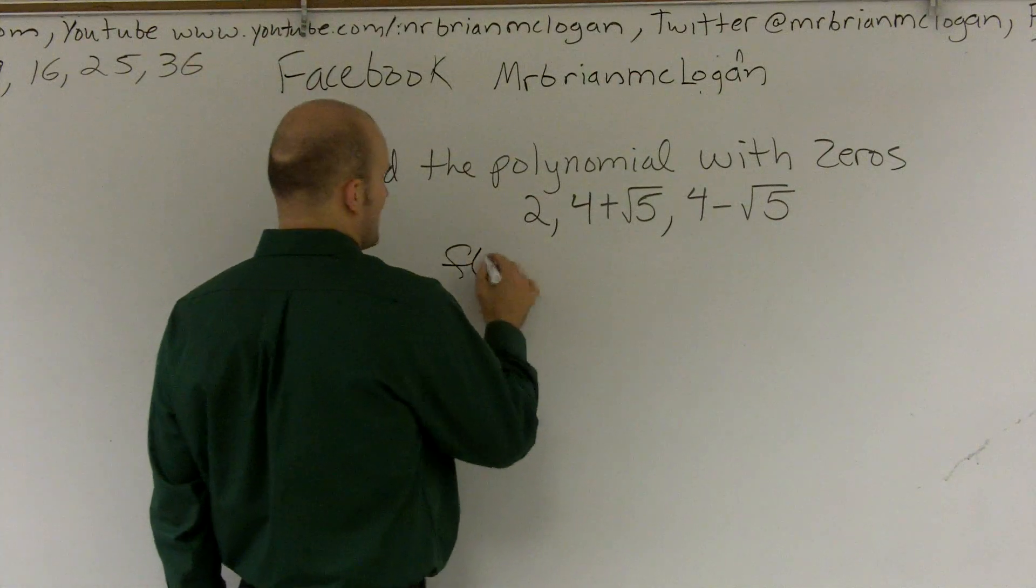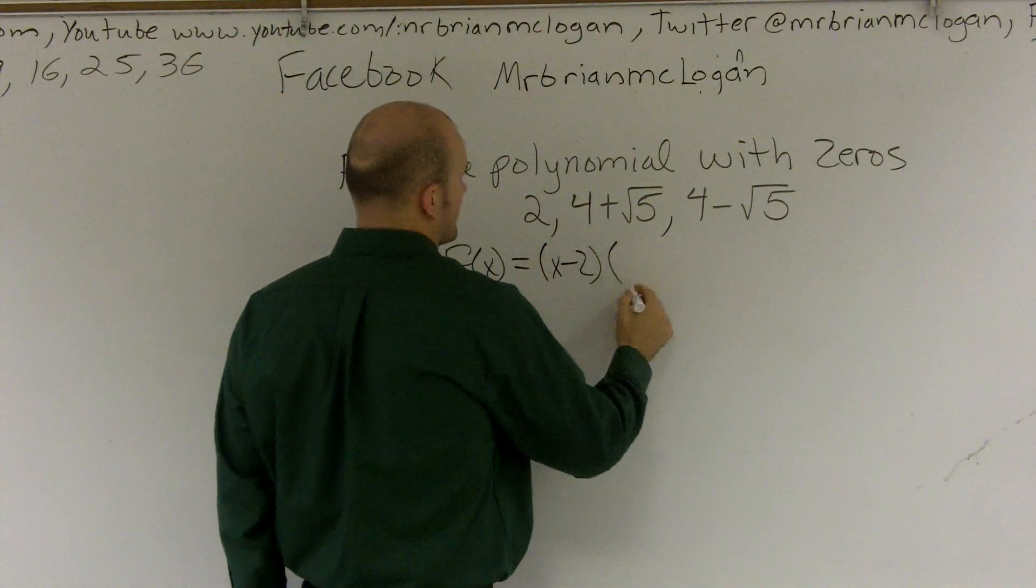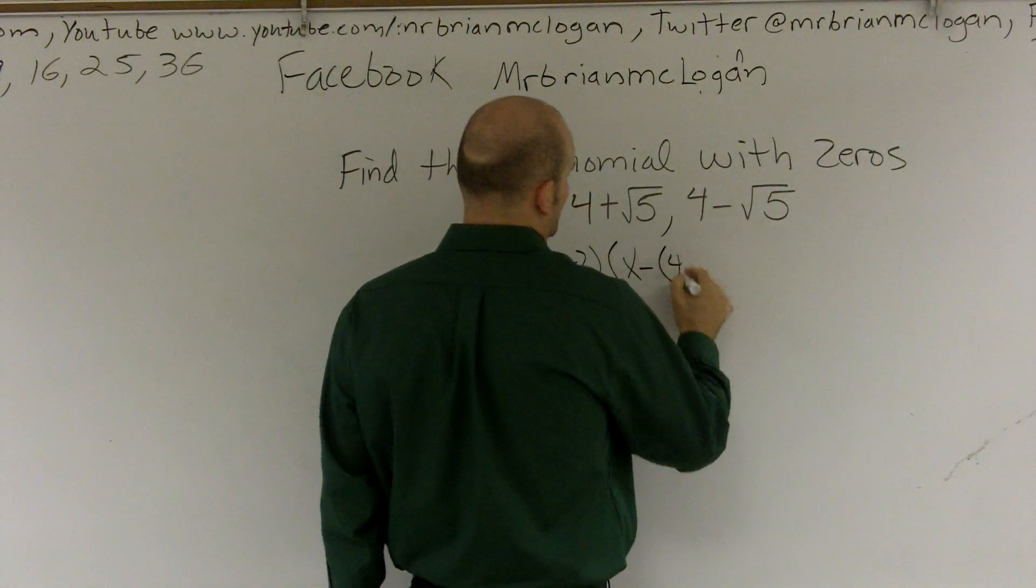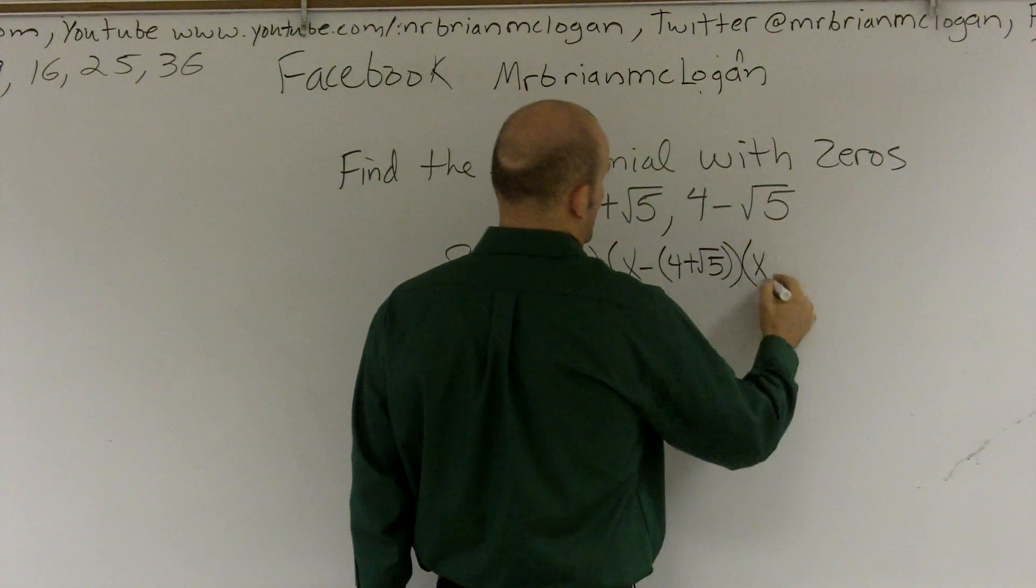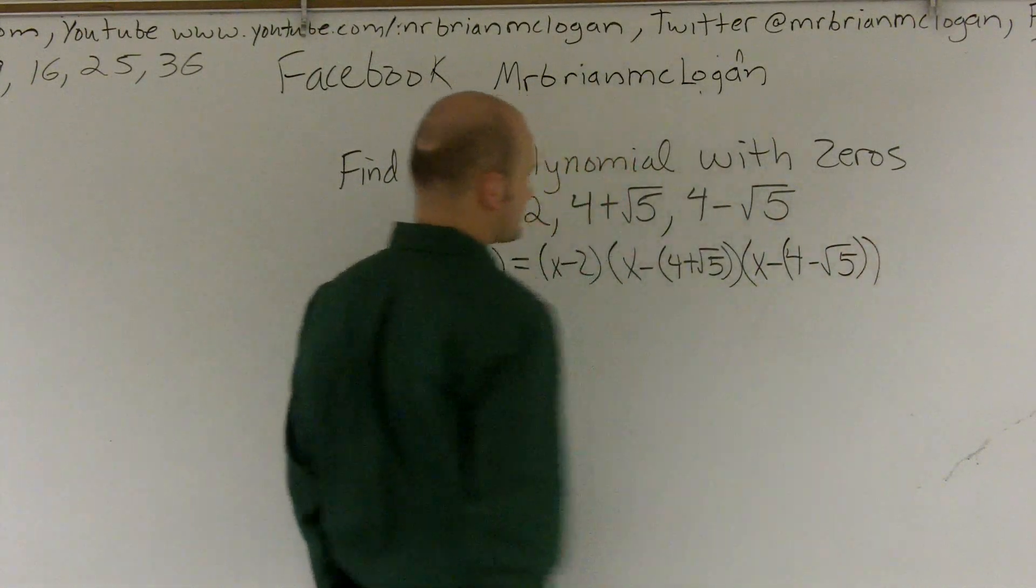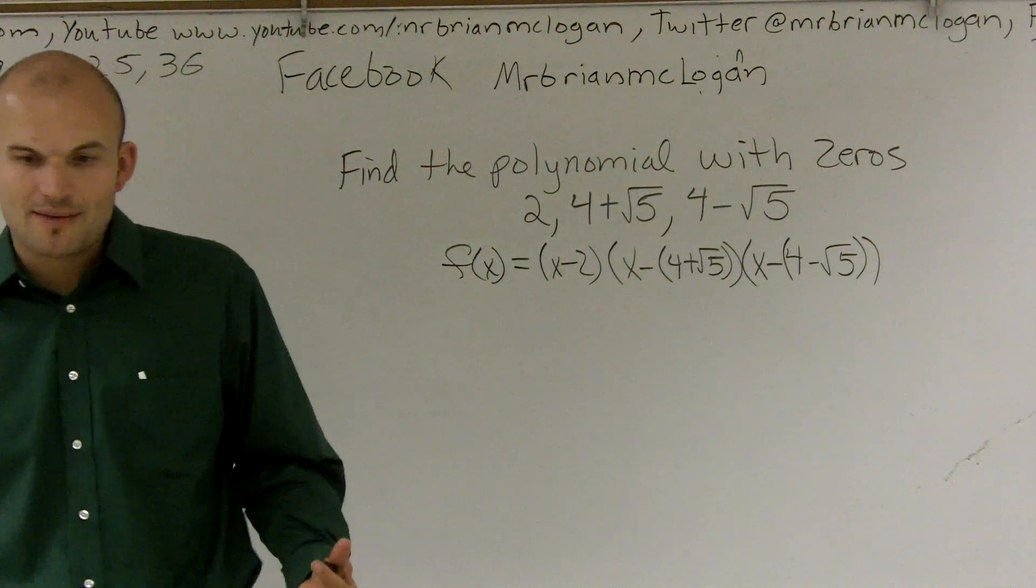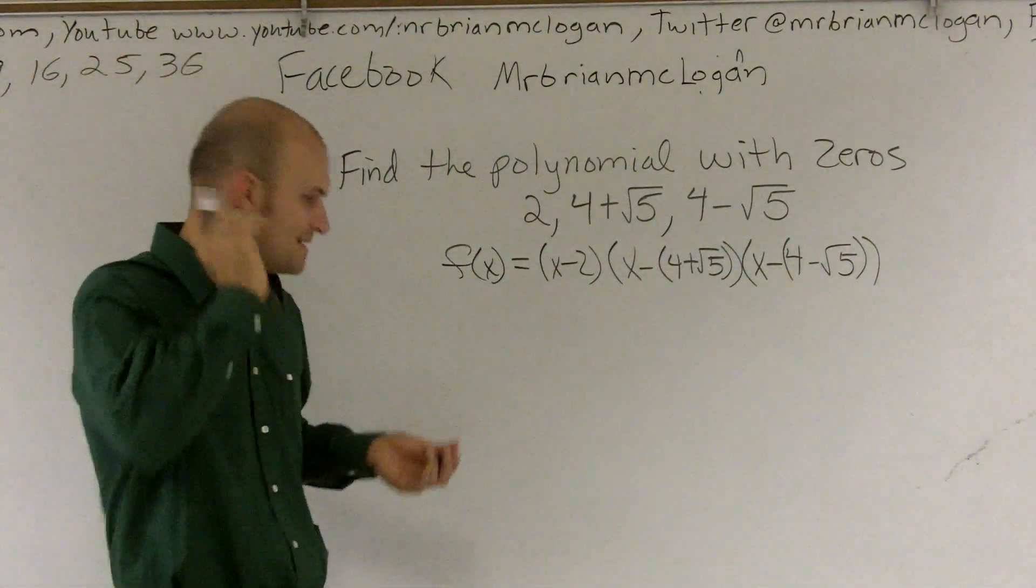So I'm going to say my function f of x equals x minus 2, times x minus 4 plus square root of 5, times x minus 4 minus square root of 5. Then, if you guys remember, what we do is, for finding our factors, we need to multiply them together.